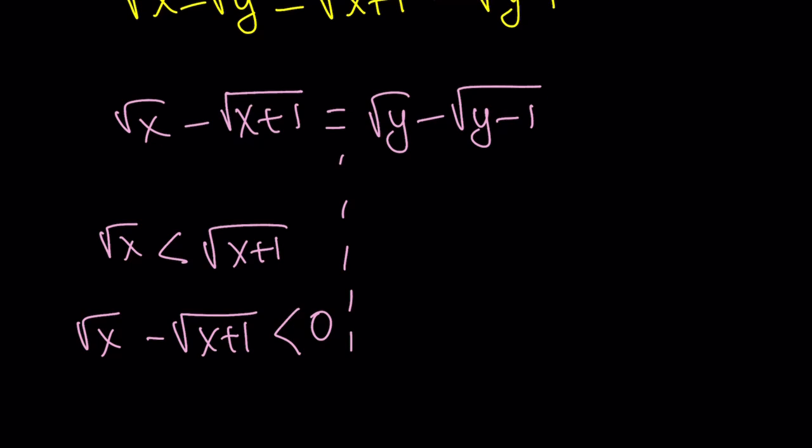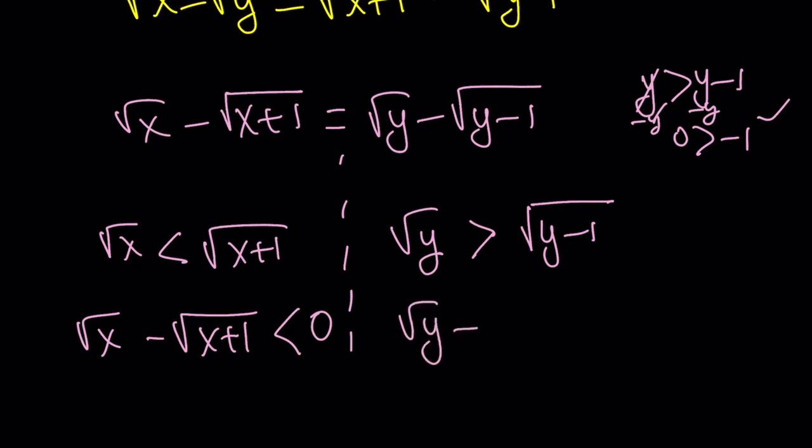Let's take a look at the right-hand side of the equation. Obviously, √y is going to be greater than √(y-1), because y is greater than y-1. If you don't believe that, write it as an inequality, subtract y from both sides, you're going to get 0 > -1, which is true. So √y - √(y-1) > 0. Here's the problem - we have an expression that is negative on the left-hand side and an expression positive on the other side, but they're equal. It's impossible. They're not equal to 0 because obviously x and x+1 cannot be the same, nor can y and y-1 be. So there is no solution to this.